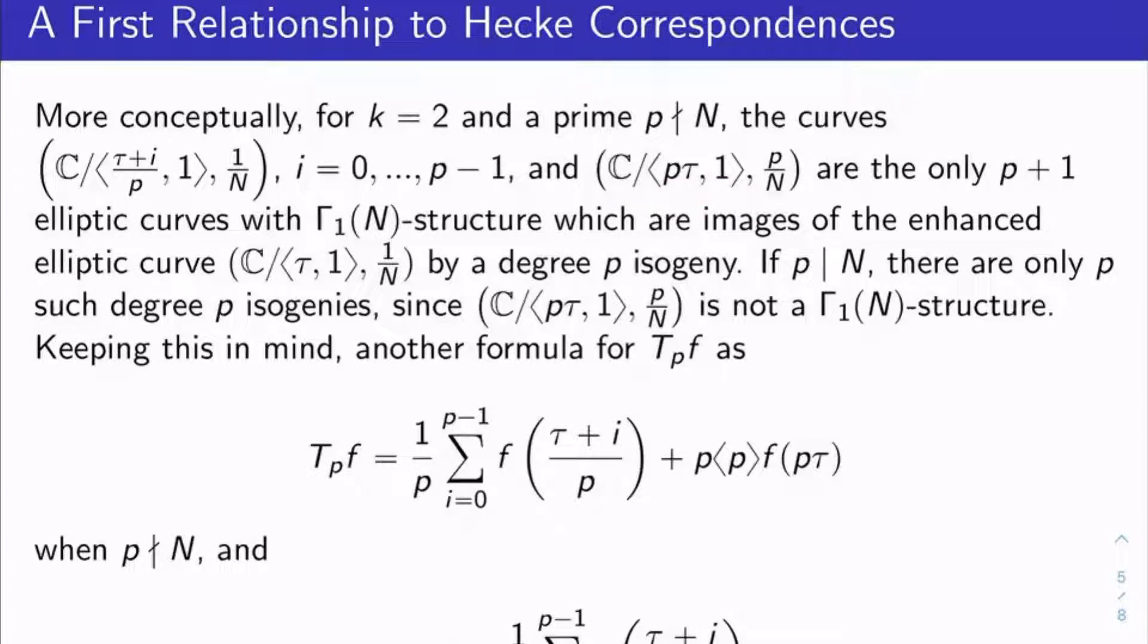Those, we talked about this, these are the only p plus 1 elliptic curves over C with gamma sub 1 of n structure, meaning equipped with a point of order n, whose images of the enhanced elliptic curve given by just C mod the lattice generated by tau and 1, equipped with the n torsion point 1 over n by a degree p isogeny. So we take this generic elliptic curve here, this generic enhanced elliptic curve for gamma sub 1 of n. We look at all of its possible images under degree p isogenies, and here are the only p plus 1 curves we end up with.